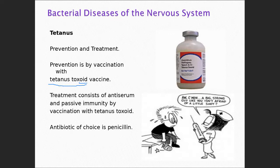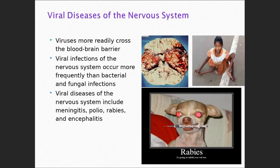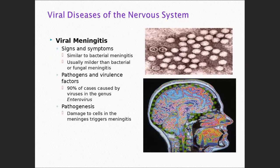To treat tetanus, we can use an antibiotic like penicillin, but you need to understand that the vaccine is against the toxin, not the microorganism. Let's move on to talk about other organisms affecting the nervous system — viruses, some protozoans, and we'll end today's lecture with prions.